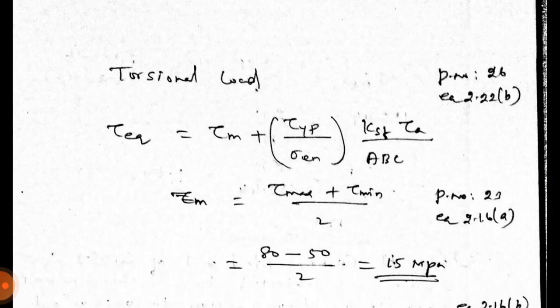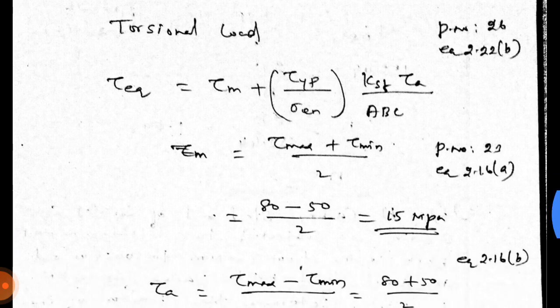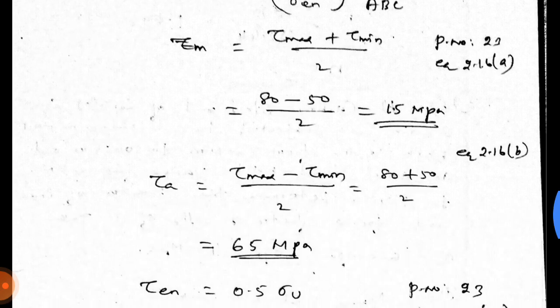This is torsional load. Page 26, equation 2.22b. Tau equal and equal to tau m plus tau yp divided by sigma en into ksf divided by abc. Tau m equal to tau max plus tau minimum divided by 2. Page 23, equation 2.16a. 15 MPa is tau m. Tau a is equal to 80 minus tau minimum, plus 65 MPa.